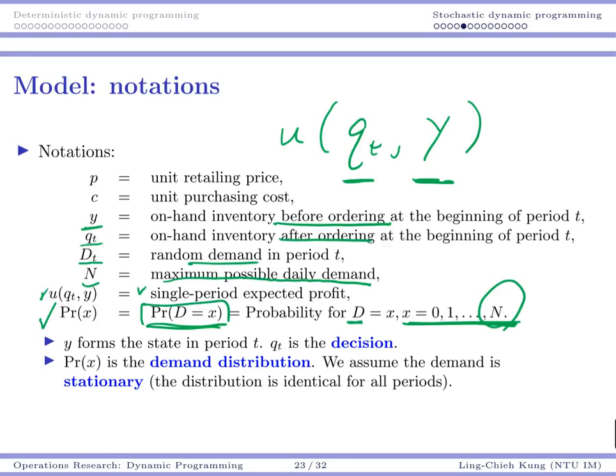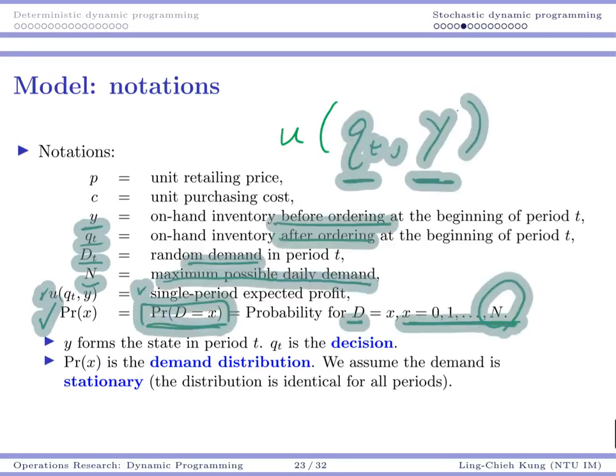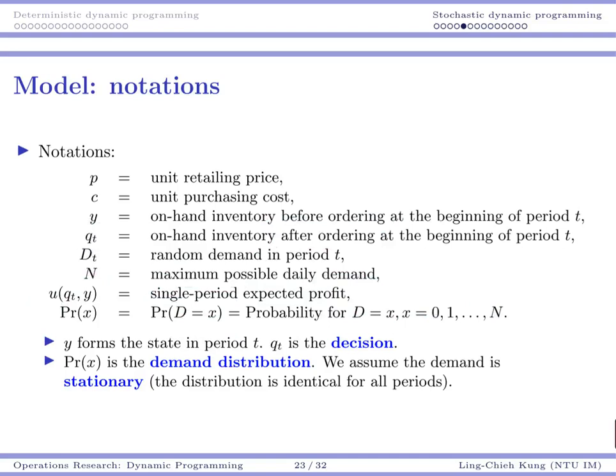If we do it more carefully, we need to remind ourselves at any time what is the state for our problem. In this case, y is the state. We will look at the previous ending inventory to decide how much to order. Qt is our decision. We want to decide after ordering how many I want to have on hand.